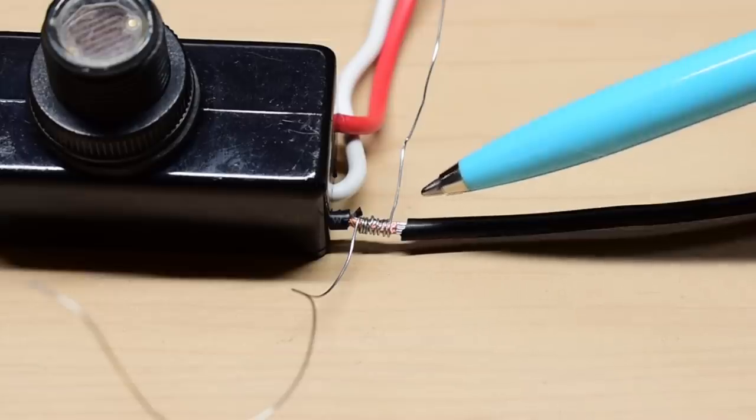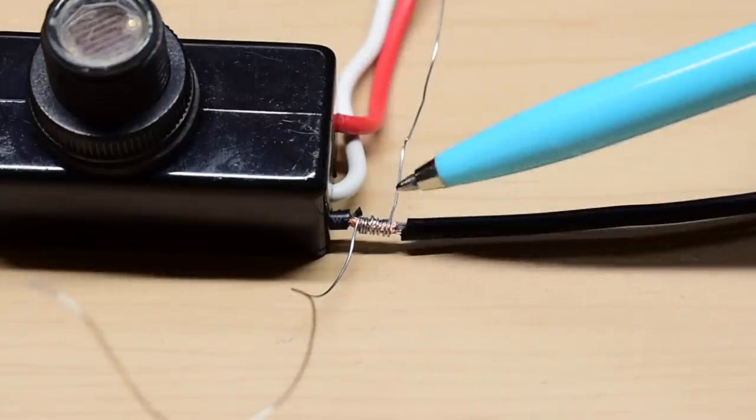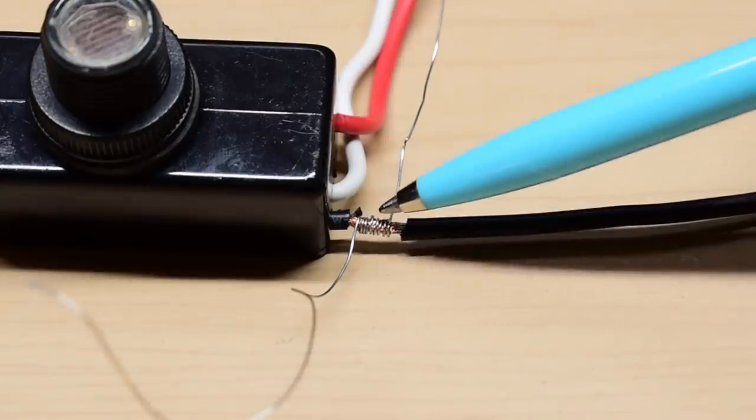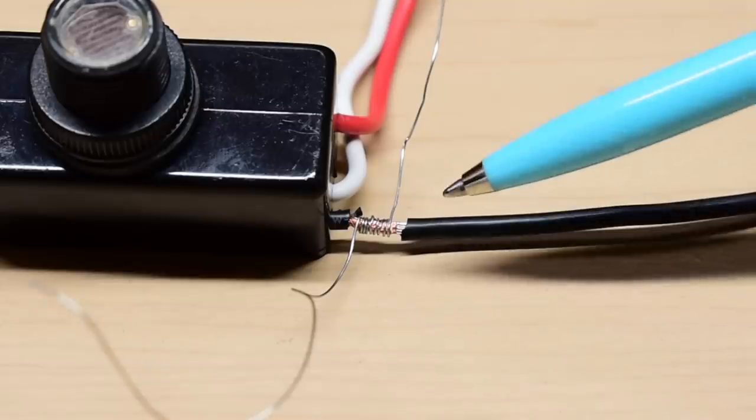Now right here, I would normally take my flush cutters, I would cut this off right here, this wire, cut that one off, and I'd apply one drop of flux, solder this, and then slide the heat shrink over and have a perfect connection.